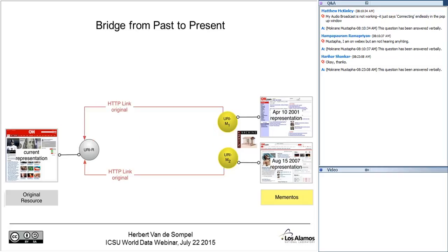The bridge, so that was the bridge from the present to the past. The bridge from the past to the present is actually very simple because these Mementos in the Internet Archive, for example, they know that they are snapshots of CNN.com. So they can easily point back again with such an HTTP link to the original CNN.com resource. In this case, they're not going to use a time gate link, but the type of this link will be original. And in this way, we've basically built a bridge from the present to the past and the past to the present. So we've truly added the time dimension to the web.